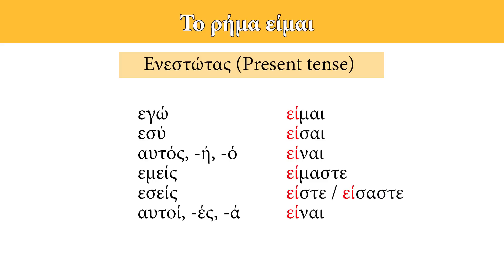All the E sounds of the verb είμαι in the present tense are written with Epsilon. Also note that the third person singular and the third person plural are the same: είναι. And finally, pay attention to the first and second person plural — the final E sounds are written with Epsilon.